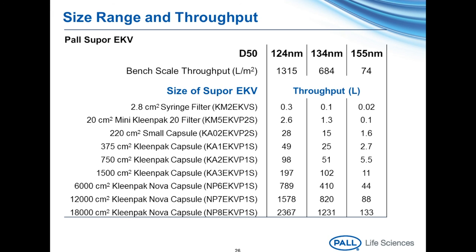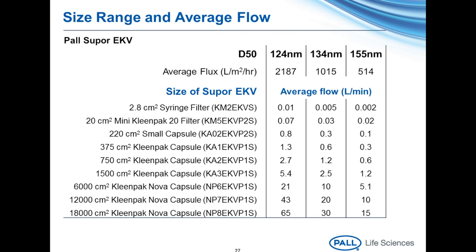If we use the same 220 centimeter squared capsule with a D50 of around 155 nanometers, we can only obtain 1.6 liters of filtered emulsion. An additional discovery demonstrated that size range corresponded to flux seen during filtration. A D50 of 124 nanometers yields the highest flux shown.